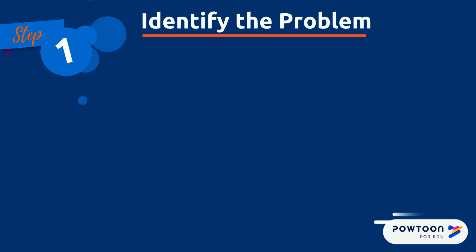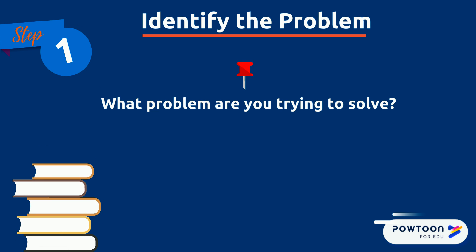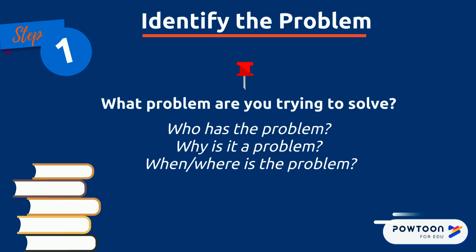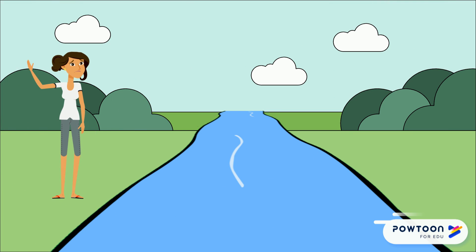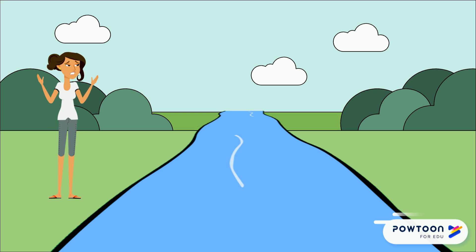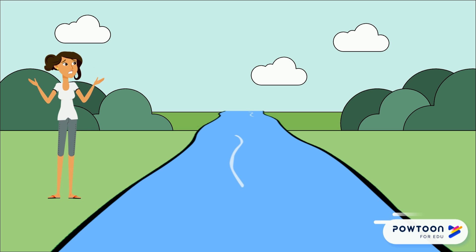Step one of the engineering design process is identifying the problem that you're trying to solve. Not only do we want to know the problem, but we want to know more information about it — like who's experiencing the problem, why they're experiencing it, and where and when it is occurring. For example, our engineering friend Maddie is stuck on one side of the river. It would take hours for her to walk around to the other side. How is she going to get across?